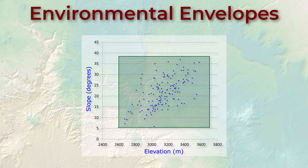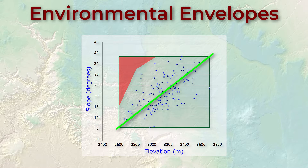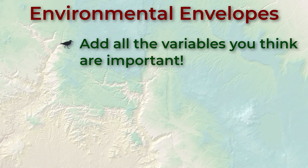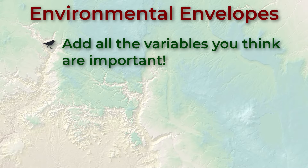Looking at the scatter plot, the data are not evenly distributed throughout the rectangle — the points follow a linear pattern going from the bottom left up to the top right. We never see points with both high slopes and low elevations, nor with low slopes and high elevations, yet we still classify these combinations as potential habitat. Also, most locations appear on the northern and western slopes with few on the southern slopes and none on the eastern slopes. Maybe aspect is an important variable we didn't measure — you can add as many variables as you want to your environmental envelope, and most species pay close attention to vegetation type.